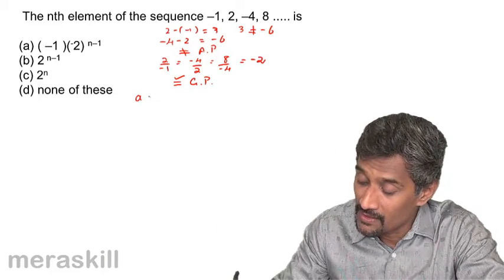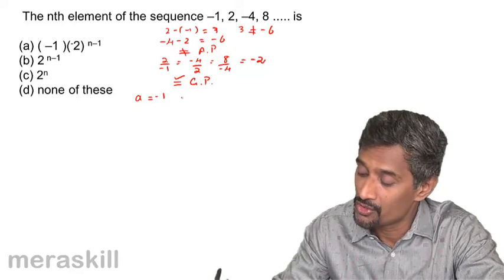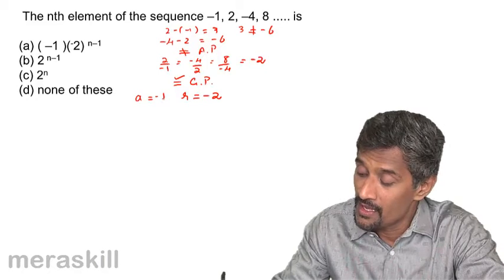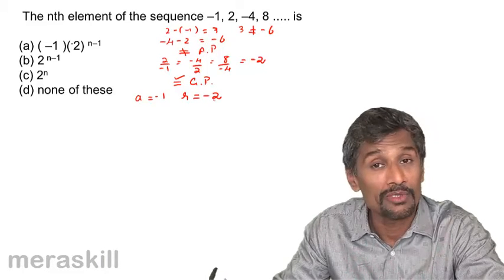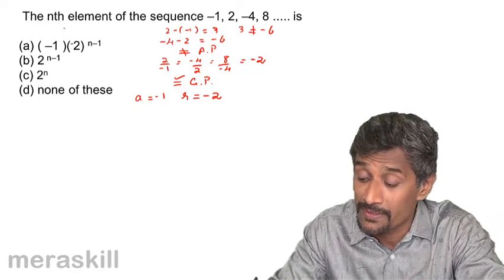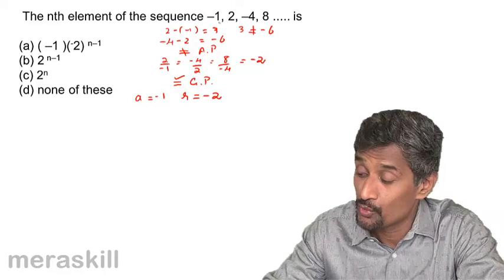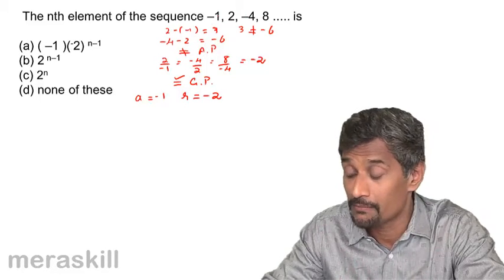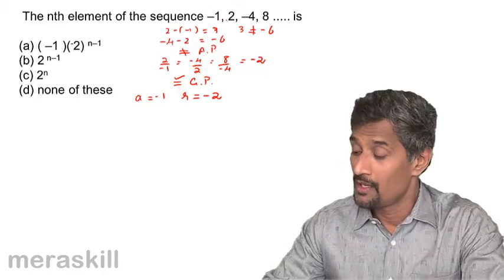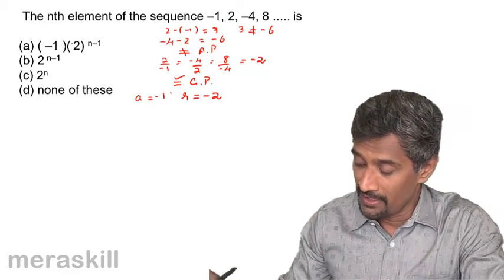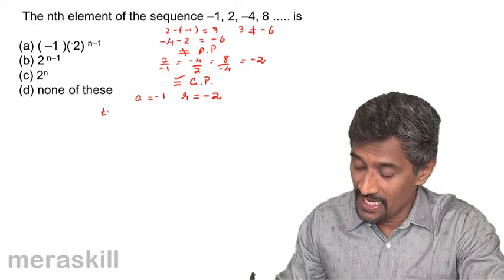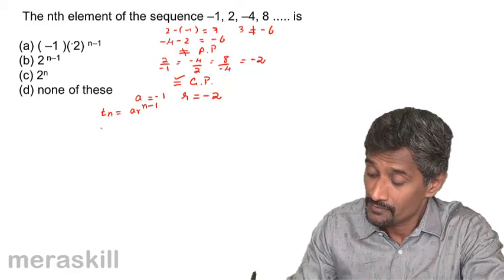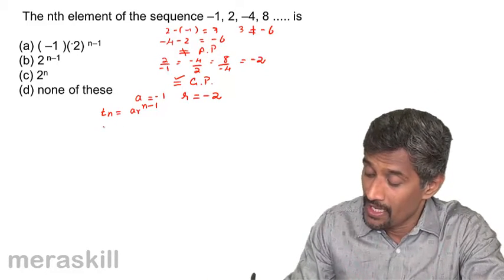The first term is -1 and the common ratio r is -2. If a question does not specify whether it is an AP or GP, take care to verify first, otherwise you may end up making a huge mistake and get the whole solution wrong. In this case tn for a GP is a·r^(n-1).